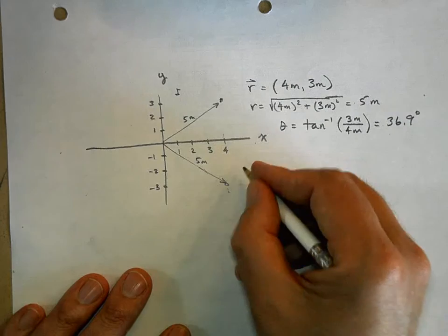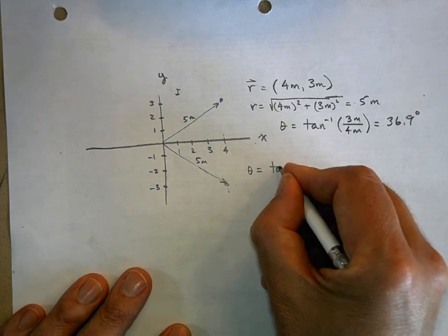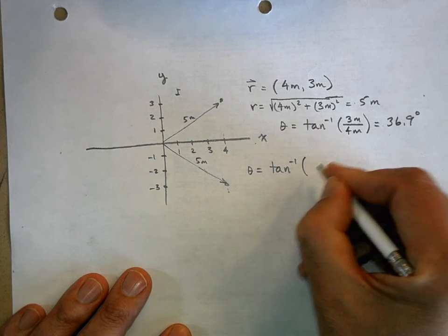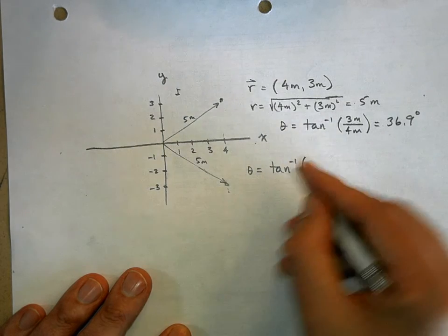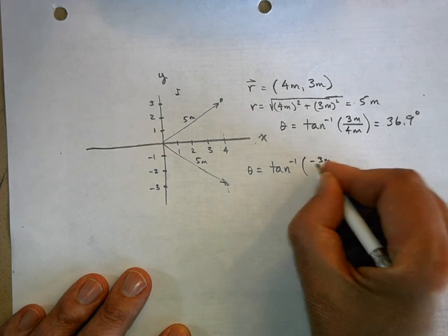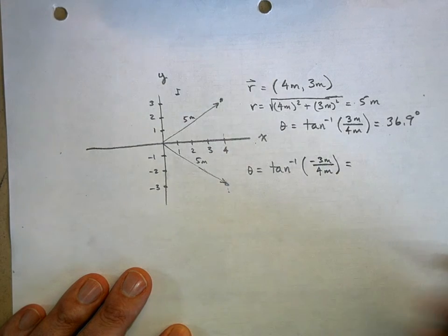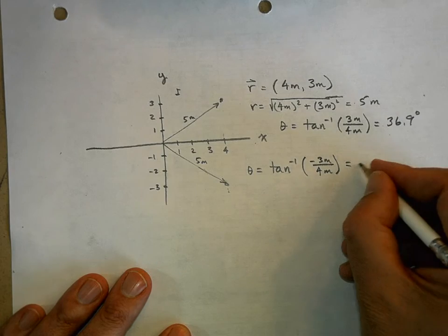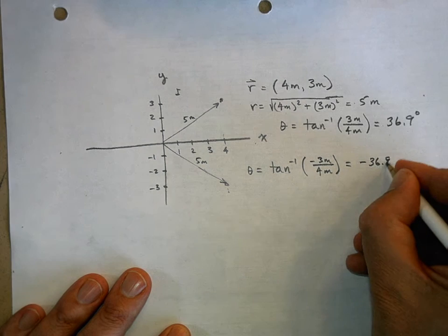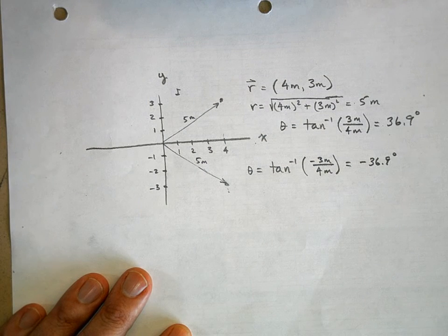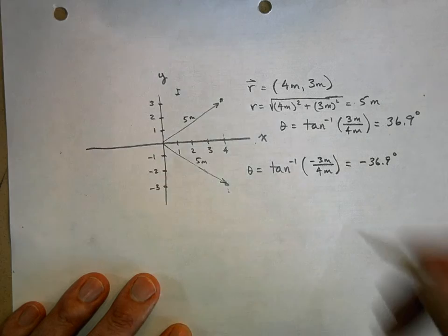But now let's use inverse tangent. And if you say, okay, well, y is negative 3 meters, and x is positive 4 meters, and when you plug that into your calculator, you're going to get negative 36.9 degrees. Now that makes sense, doesn't it? Because, look,